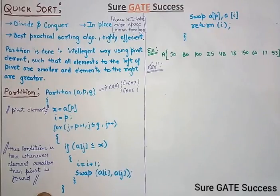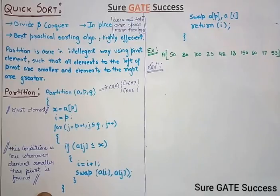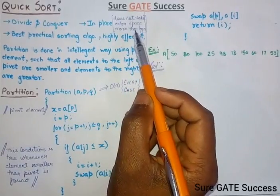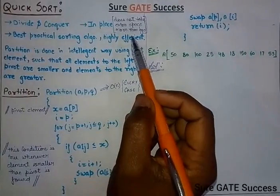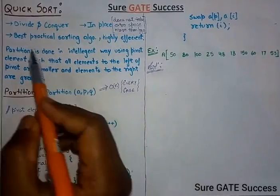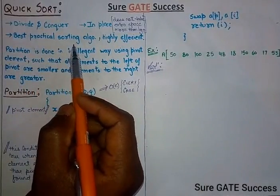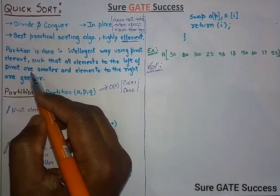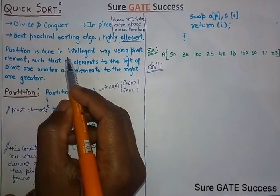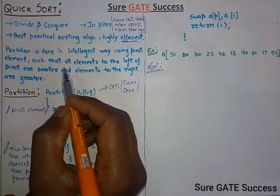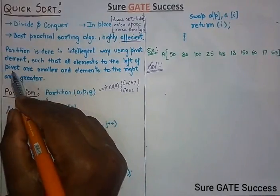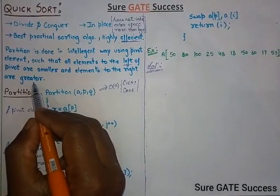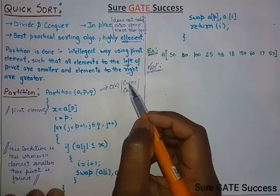Let's cover a few basic points. Quicksort is an in-place algorithm, meaning it does not take any extra space more than log n. It is one of the best practical sorting algorithms and is highly efficient. We perform a partition such that all elements smaller than the pivot are on the left and all elements greater than the pivot are on the right.